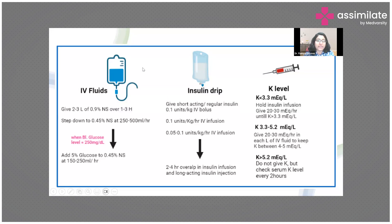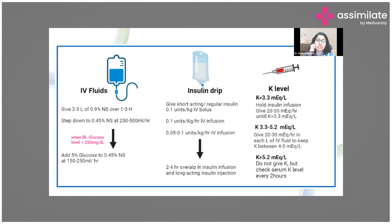The second component is an insulin infusion. Give a small initial bolus of 0.1 units per kg — so for a 50 kg patient, that is 5 units of short-acting insulin — then start an infusion at 0.1 units per kg per hour IV. Monitor blood sugar every 30 minutes initially, then taper the infusion to 0.05 to 0.1 units per kg per hour as sugars come down, and eventually transition from short-acting to long-acting insulin.